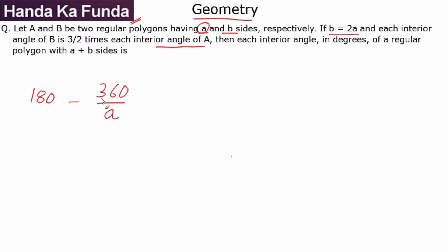What I am trying to say is that suppose the exterior angle is 30, then the interior angle will be 180 minus 30 or 150. Very similarly, the interior angle for B is going to be 180 degree minus 360 by B which is effectively 2A. These are my interior angles.